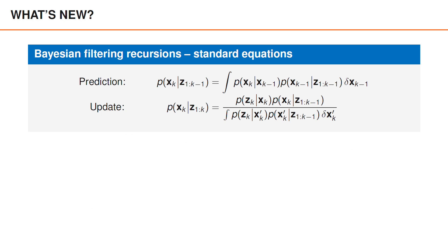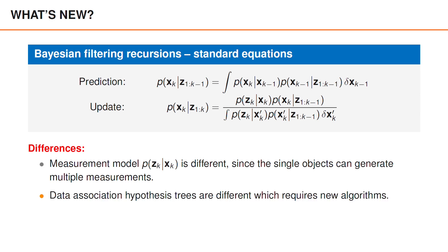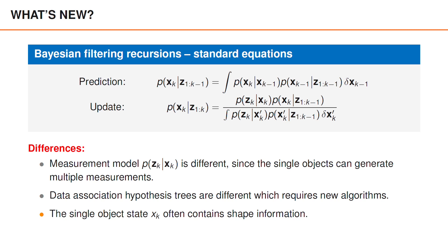On a conceptual level, we perform extended object tracking using the same type of prediction and update equations as when we perform tracking of point objects. We still use the set of object states at time k as a state variable, and perform integration using the set integral. The main difference is that objects can generate multiple detections, which gives a different measurement model, p of z_k given x_k, used in the update step. We still have data association uncertainties, but now have even more possible associations, since objects are not constrained to generate at most one detection, and the hypothesis trees are also slightly different. Finally, another minor difference is that we now include information about the object's shape into the state vector, since that is a property that influences the measurement model, and we may therefore be able to estimate the shape from the measurements.